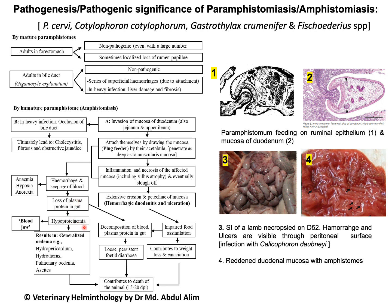Due to the blood feeder effect and loss of the mucosa, there will be continuous leakage of hemorrhage into the gut, leading to generalized hyperproteinemia. In cases of generalized edema, fluid will accumulate in different body cavities and organs, leading to hydropericardium, hydrothorax, pulmonary edema, and ascites. One important clinical sign is bottle jaw, where fluid accumulates under the jaw.